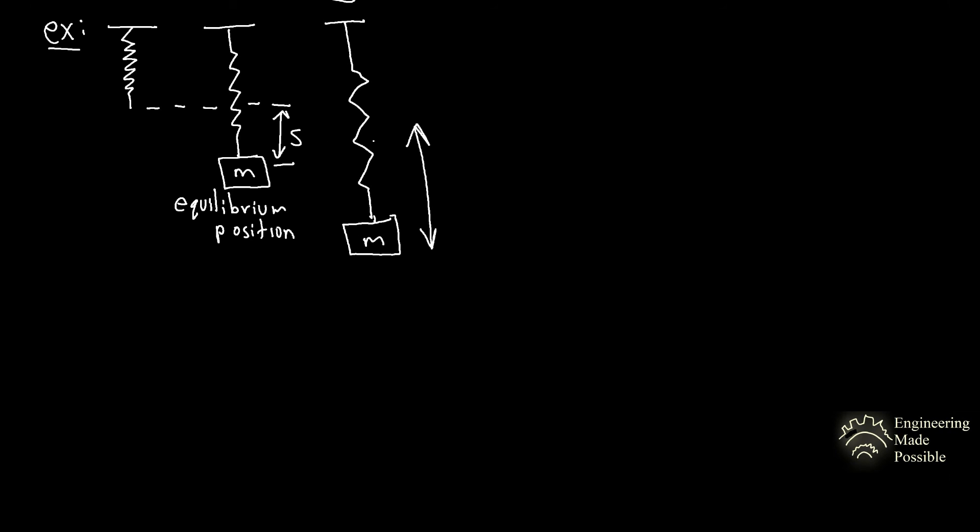So for this example, we'll be using a spring with a mass hanging at the end of that spring. So initially, this spring is at this length originally, and then you hang a box with a mass m, and it displaces, let's say, a s amount. So it displaces at equilibrium position.